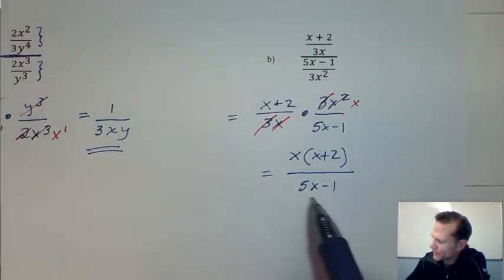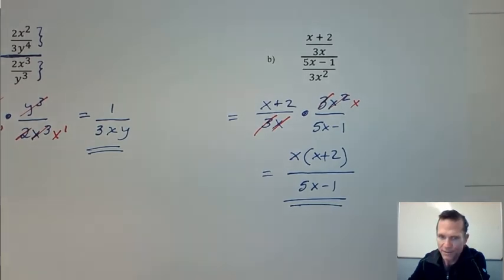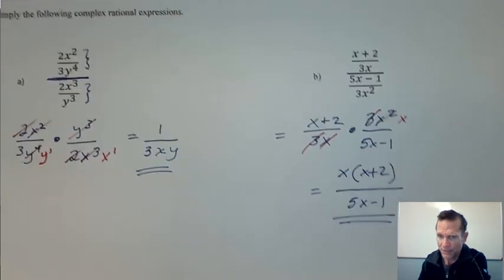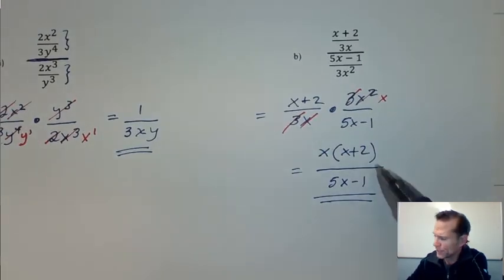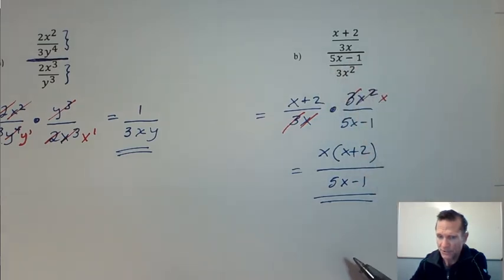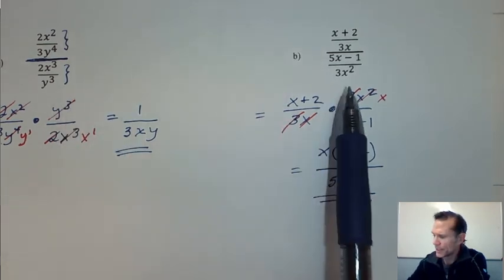What we often forget or get confused about is what does it mean to actually simplify a complex rational expression, and that means we just want to get it into a single rational expression like this where we don't have a big mess of fractions inside of fractions.